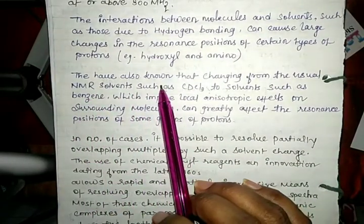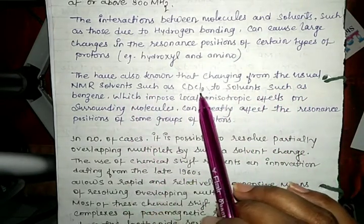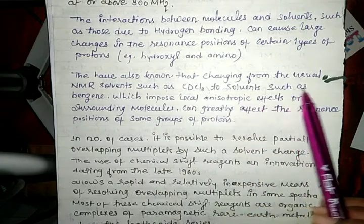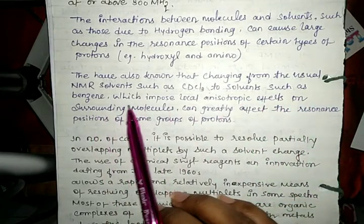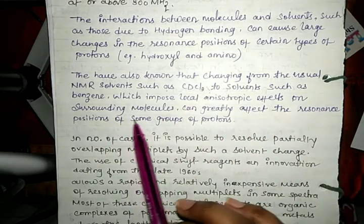It's also known that changing from the usual NMR solvents such as CDCl3 to solvents such as benzene, which impose local anisotropic effects on surrounding molecules, can greatly affect the resonance positions of some groups of protons.